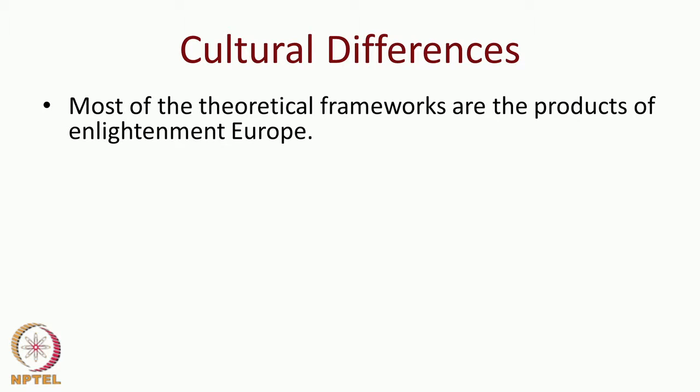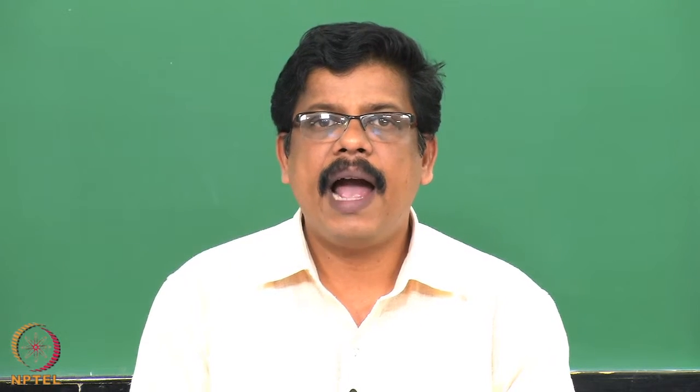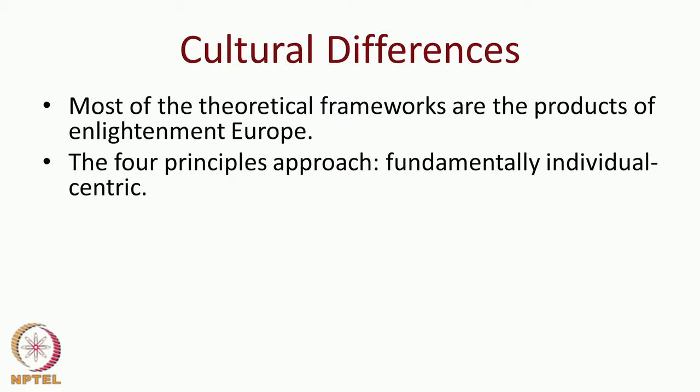Most of the theoretical frameworks we use to understand ethical problems in medical practice are products of Enlightenment Europe. For example, the two important approaches — deontologism and utilitarianism — originated around the 17th, 18th, and 19th centuries in Europe. They are typical European frameworks.